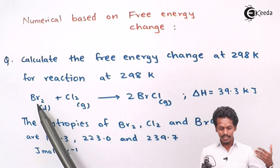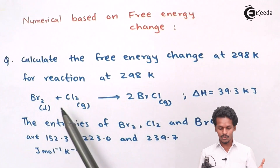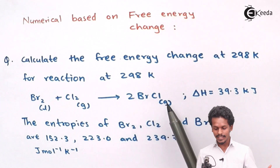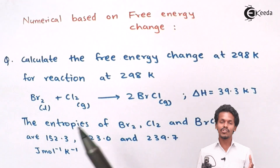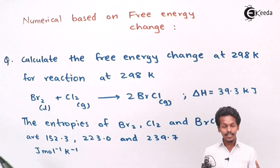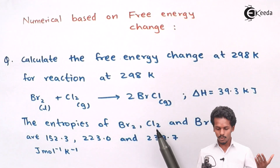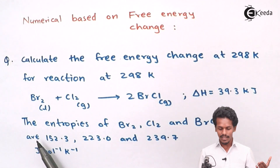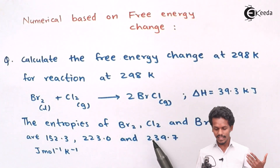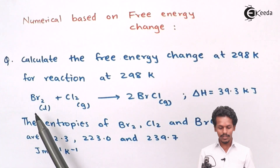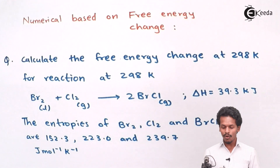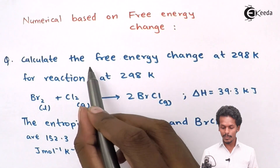For the reaction at 298 Kelvin: Br2 plus Cl2 are given as reactants, producing two moles of BrCl. In this case, the delta H — the change in enthalpy — has been found to be 39.3 kilojoules. The entropies of Br2, Cl2, and BrCl are 152.3, 223.0, and 239.7 J/mol/K respectively. From this data, we have to calculate the free energy change.